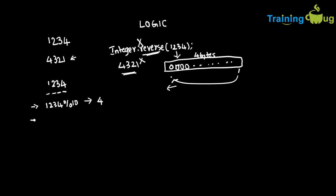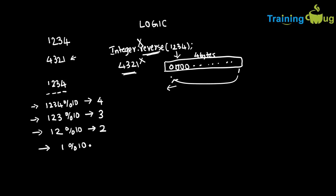In the second iteration, the number should be 123, not 1234, because we already got 4. So 123 % 10 gives remainder 3. Similarly, in the next iteration 12 % 10 gives remainder 2, and then 1 % 10 gives remainder 1. After that, the number becomes 0. So this is the logic — we get our individual remainders or digits one by one.